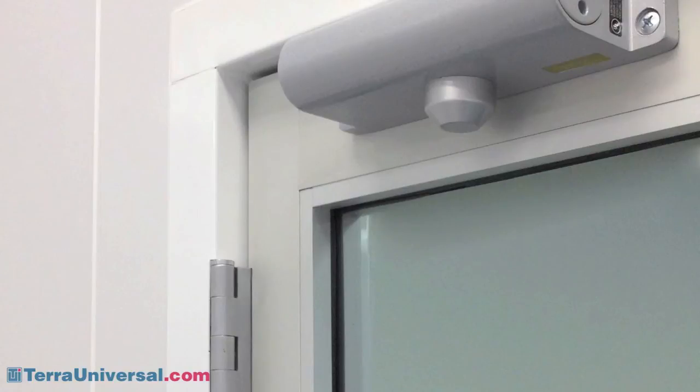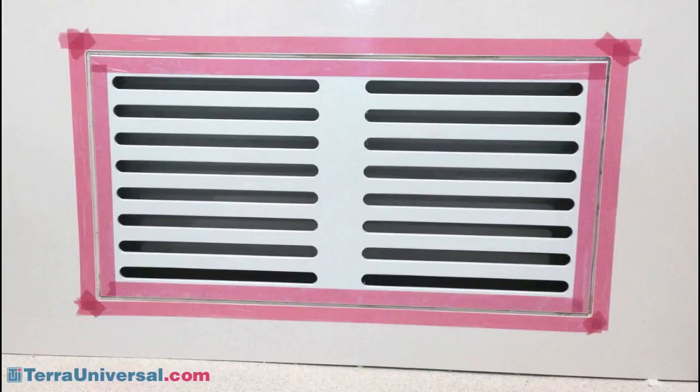Apply seam sealant to any additional cracks in doors, windows, or other seams inside the room. Silicon caulking can be used around sealing panels if required.